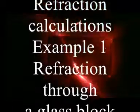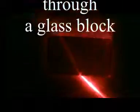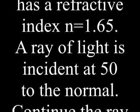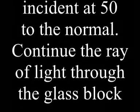Refraction Calculations Example 1: Refraction through a glass block. A glass block has a refractive index of 1.65. A ray of light is incident at 50 degrees to the normal. Continue the ray of light through the glass block.